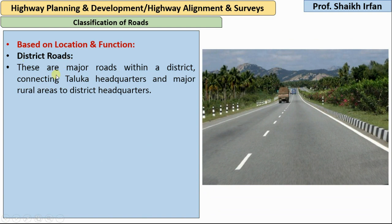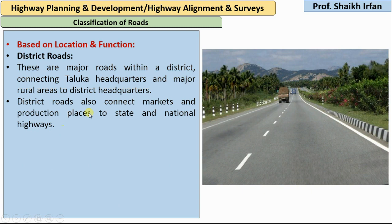The next type is district roads. These are the major roads within a district, connecting Taluka headquarters and major rural areas to the district headquarters. They also connect markets and production places to state and national highways.